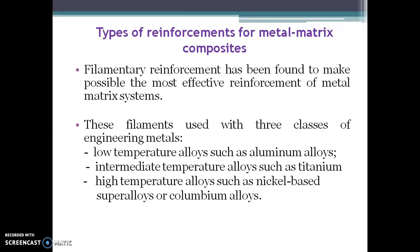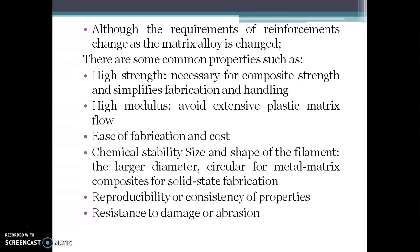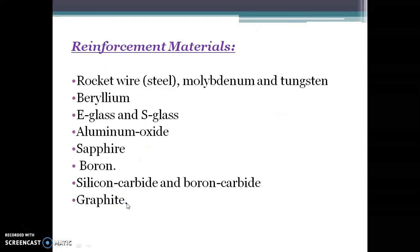The preliminary reinforcement component has been found to make possible the most effective reinforcement of metal matrix composites. Filaments are used for three classes of engineering metals: low-temperature alloys such as aluminum alloys, intermediate-temperature alloys such as titanium, and high-temperature alloys such as nickel-based superalloys. Common required properties of reinforcements include high strength, high modulus, ease of fabrication, low cost, chemical stability, reproducibility, and resistance to damage.